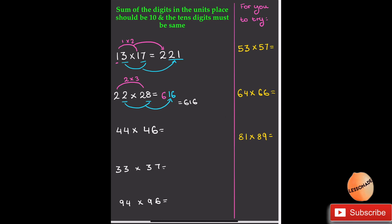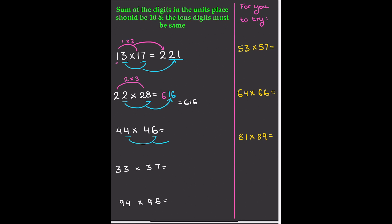Next, we're going to do 44×46 the same way. We multiply the units first: 4×6 = 24. Then we multiply the tens digit by its next highest number — 4×5 = 20. So the answer is 2024.